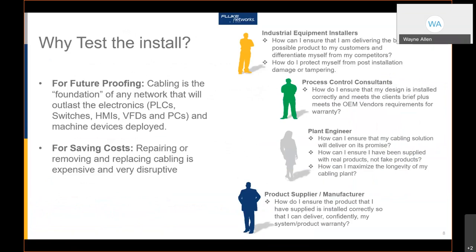People ask why they should be testing. My response is usually: the cabling is the foundation of your network and it will outlast your electronics. In a production or industrial automation environment, your PLCs, switches, HMIs, VFDs, and PCs will all be replaced over the life of the cabling. Doing it correctly the first time means you don't have to repair later or face expensive and disruptive cable replacement.